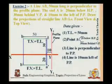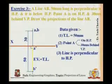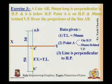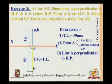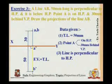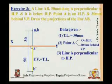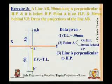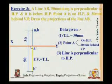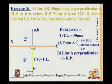Let us consider a third example. I will read this. A line AB, 50 mm long, is perpendicular to HP and it is below HP. Point A is on the HP and 30 mm behind VP.